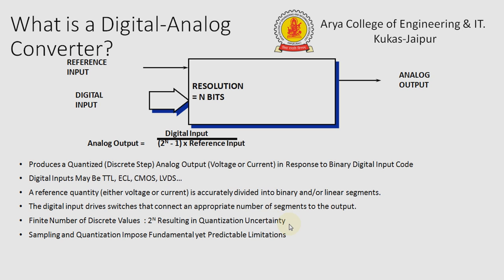A digital to analog converter produces a quantized analog output in response to a binary digital input code. That means we give input in digital form and get output in analog form. Digital inputs may be from TTL, ECL, CMOS, or any other device. A reference quantity is accurately divided into binary or linear systems.